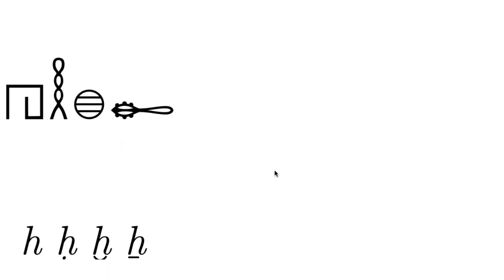We have four types of H in the Egyptian alphabet. The first H sounds like a normal English pronunciation — it's a 'her' sound, like in 'house'.